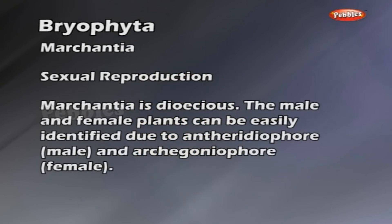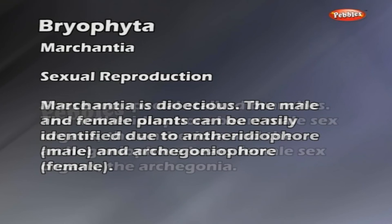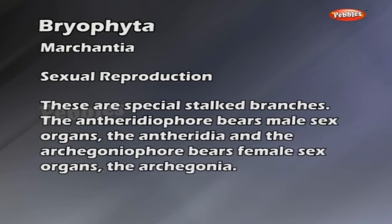Sexual reproduction: Marchantia is dioecious. The male and female plants can be easily identified due to the antheridiophore (male) and archegoniophore (female), which are special stalked branches. The antheridiophore bears male sex organs, the antheridia, and the archegoniophore bears female sex organs, the archegonia.